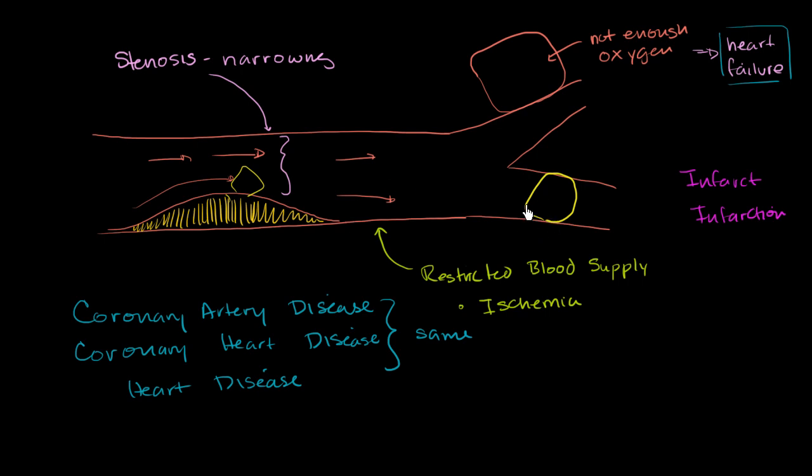And an embolism is the general term for something that floated around and then eventually blocks a vessel. And if it was due to a released plaque that also had clotting factors around it after it got released, then we would call this a thromboembolism. And this would completely reduce the blood flow.